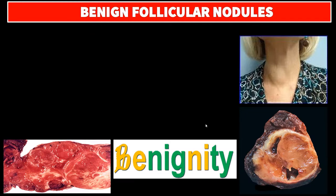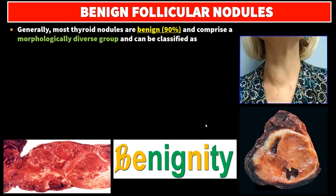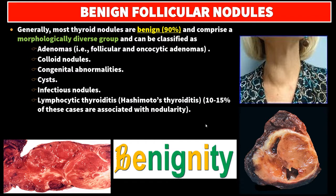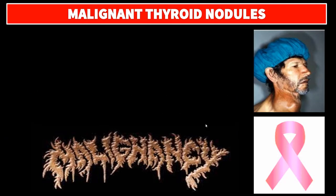Benign follicular nodules. Generally, most thyroid nodules are benign — 90% — and comprise a morphologically diverse group that can be classified as adenomas (follicular and oncocytic adenomas), colloid nodules, congenital abnormalities, cysts, infectious nodules, lymphocytic thyroiditis, Hashimoto's thyroiditis — 10 to 15% of these cases are associated with nodularity — granulomatous nodules, hyperplastic nodules, and malignant thyroid nodules.